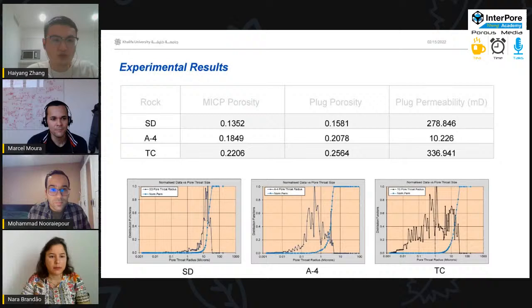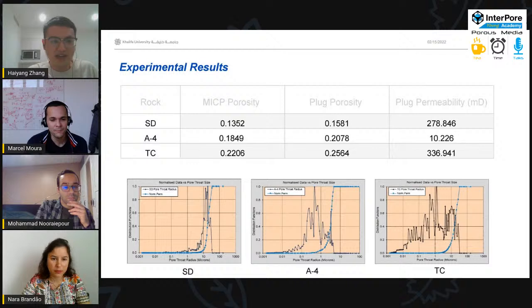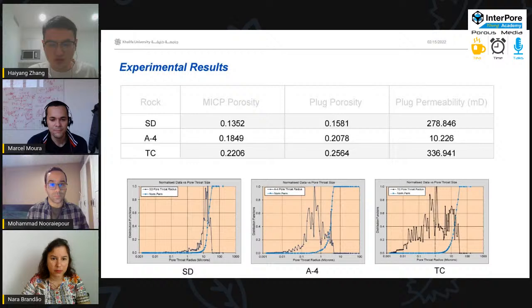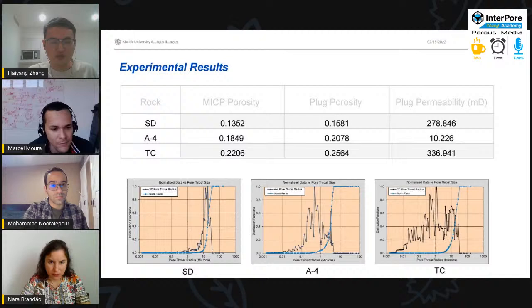We conduct laboratory measurements on these three samples, such as mercury injection capillary pressure test. And we have the MICP porosity, or we can see the connective porosity. And we have the helium porosity and the plug permeability.